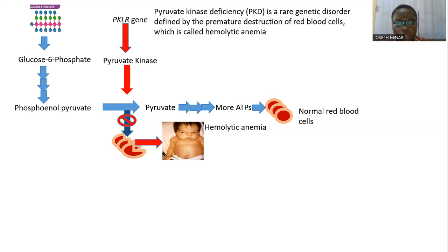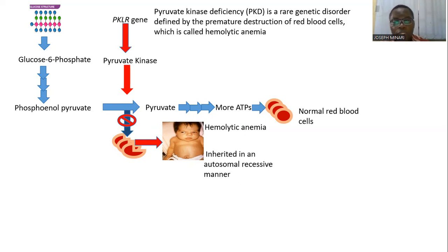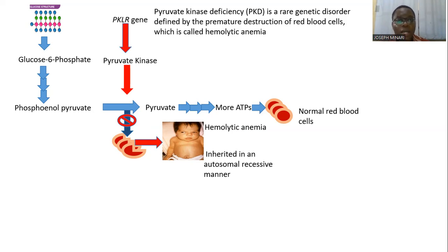This premature destruction is what leads to what we call hemolytic anemia. This kind of disorder is actually inherited in an autosomal recessive manner. Although the severity of this disorder varies — in some cases the symptoms might be mild, while in others it might actually be severe.